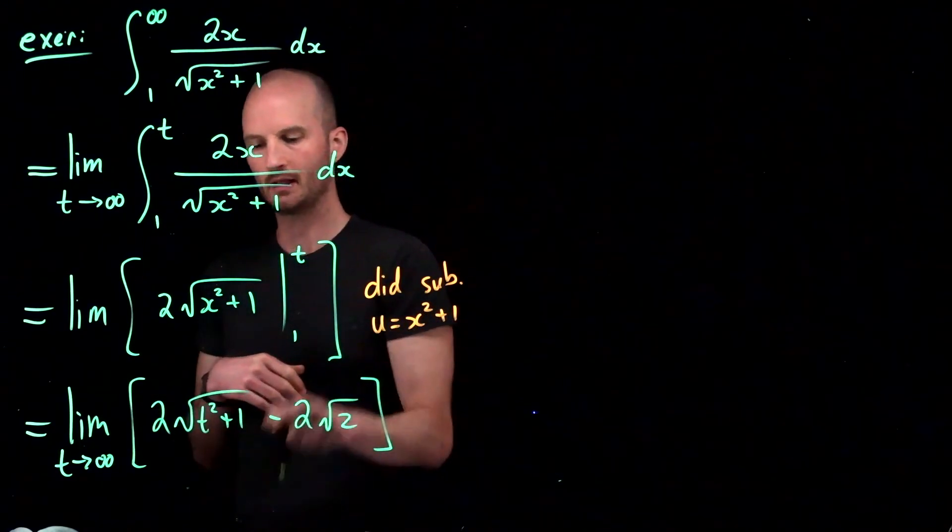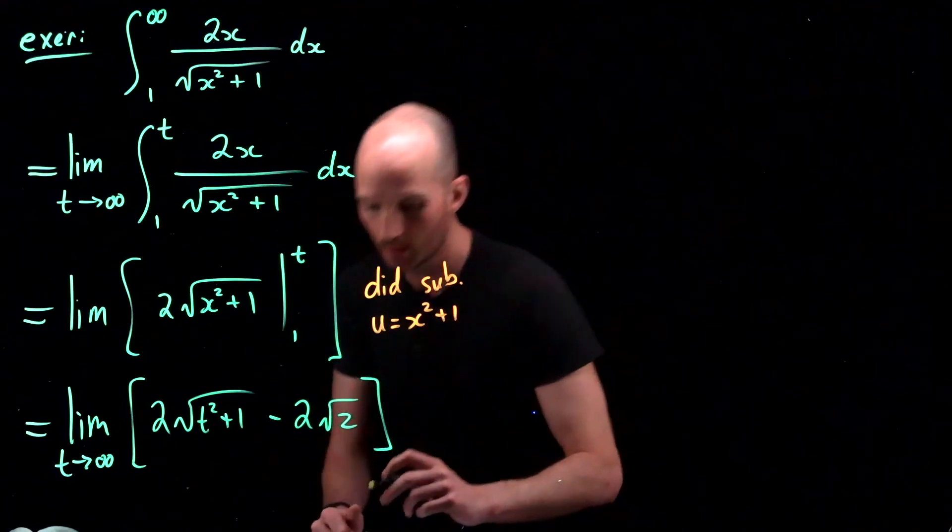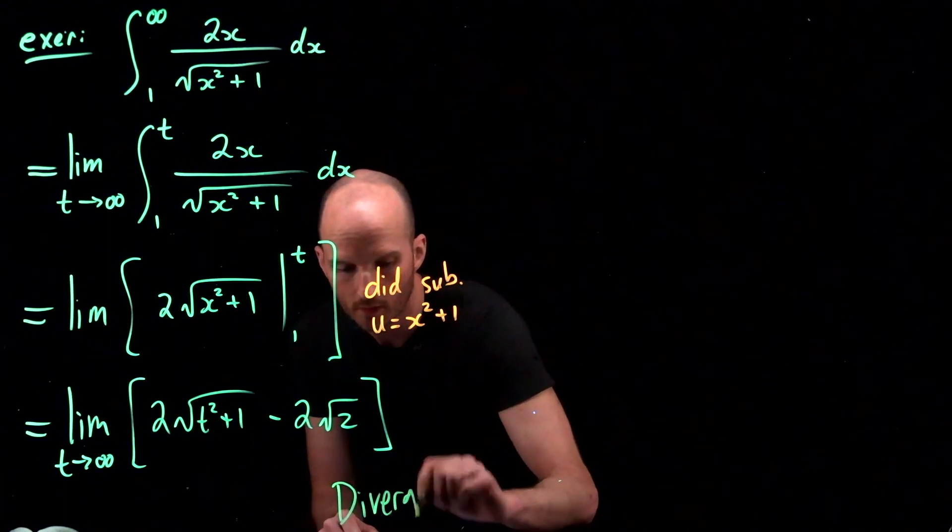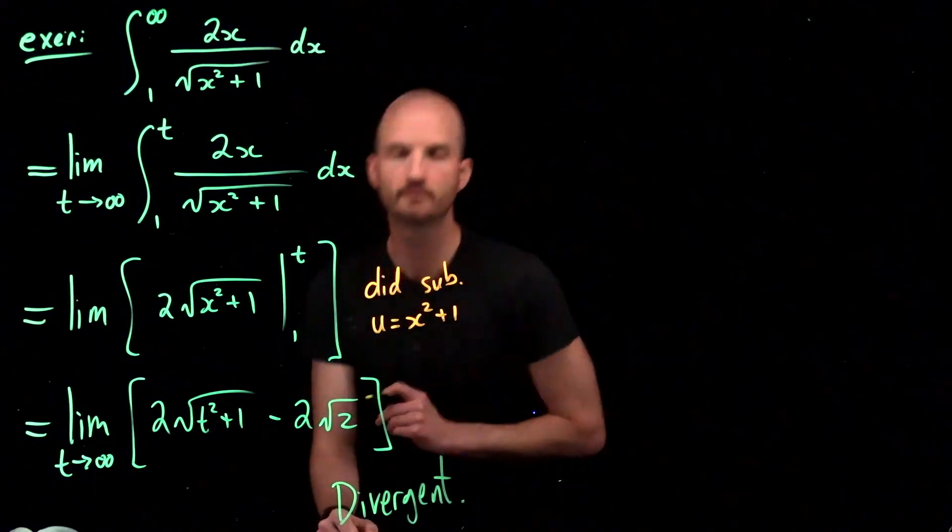So this part of the limit goes to infinity. So it's okay at this point to just write divergent.